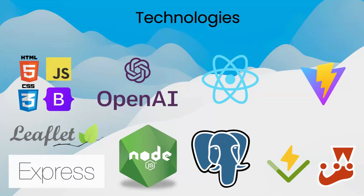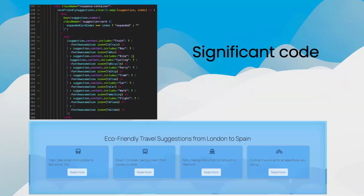Now onto our first significant piece of code. For the first snippet, we have gone for this code which allows us to filter through our AI-generated responses, looking for keywords such as train, bus, and bike, and then applying matching icons to option cards, improving both the user experience and the visual appeal of our website. We are proud of this piece of code as it builds upon our implementation of AI — it doesn't just return a card of what the AI responded. On the bottom here, you can see what the code looks like on the website.